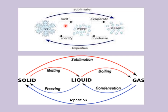When you supply heat to ice it melts to water; supply more heat and it evaporates to steam. Steam can condense back to water, and water can solidify to ice. Ice directly converting to steam or vapor is sublimation; steam directly converting to ice is deposition. In the diagram: solid to liquid is melting, liquid to gas is boiling, gas to liquid is condensation, and liquid to solid is freezing.